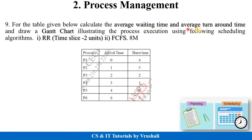Similarly, calculate average waiting time and average turnaround time and draw the chart using RR and FCFS algorithms — the particular process table will be given. I am suggesting you compulsorily prepare this question, as it is a most probable and mostly asked question in previous year papers. You should prepare how to calculate average waiting time and average turnaround time using different scheduling algorithms.